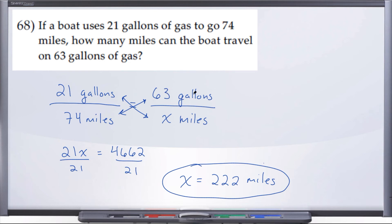So a boat that travels with 21 gallons can go 74 miles, but if they fill their gas tank up with 63 gallons, they can go a total of 222 miles, assuming that they're burning the same number of gallons per mile. So here we have X equals 222 miles for number 68.